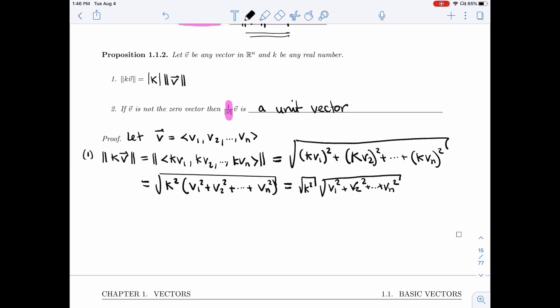Now, square root of K squared, that's absolute value of K. Do you remember that from Calculus 1? The square root and the square cancel unless it's a negative number, and then you have to get rid of the negative, so absolute value of K. And then this second factor in this product is the length of V. And that's what you wanted, perfect.